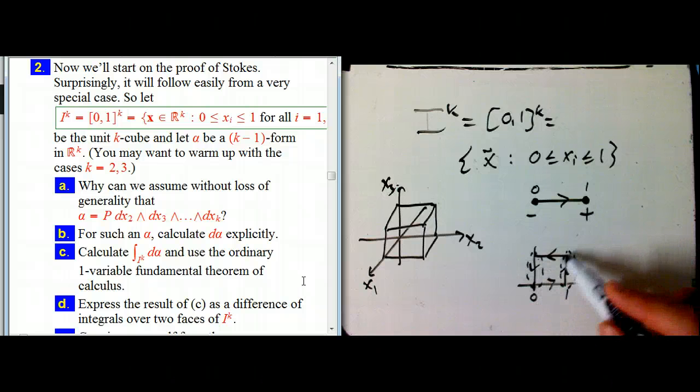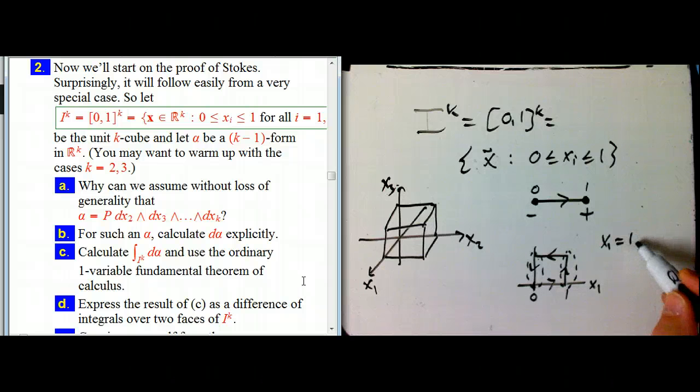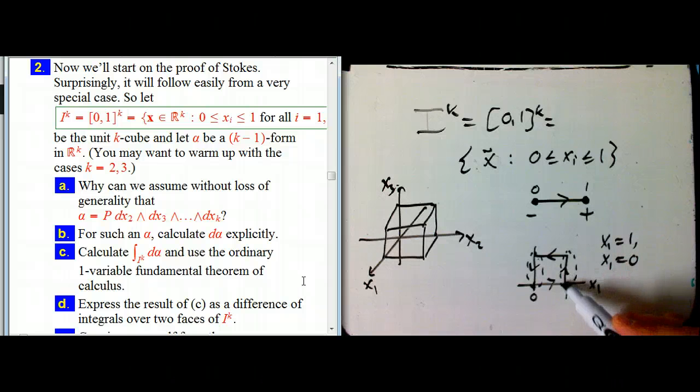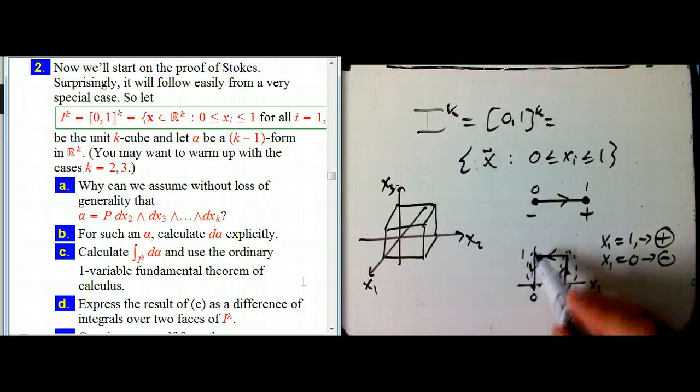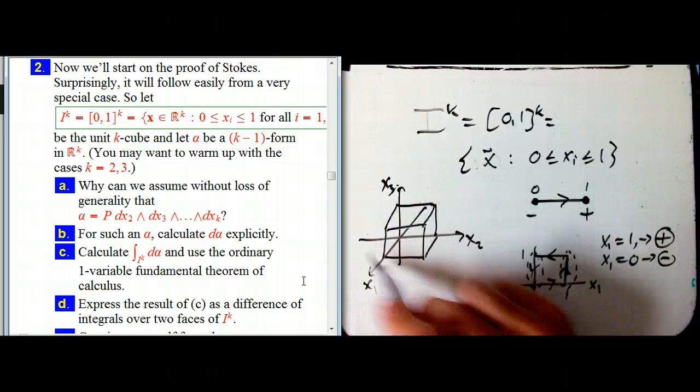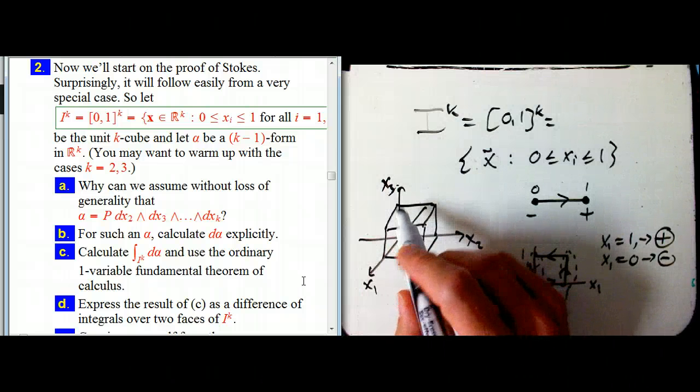I'm just going to, it turns out I'm going to just need to know about the parts of the boundary where x_1 equals one, and everything else is between zero and one, and x_1 equals zero. Notice that we get the ordinary orientation going from x_2 is zero to x_2 is one on the far end, so that's kind of the plus orientation, and here I get the minus orientation.